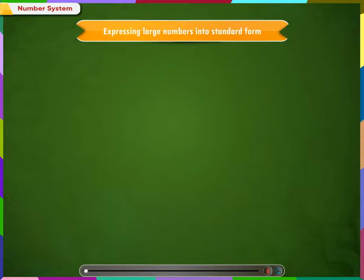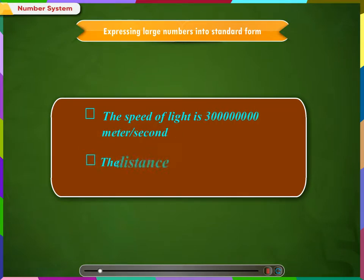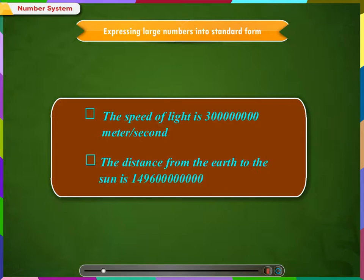Expressing large numbers into standard form. In our day-to-day life, we hear such statements. The speed of light is this. The distance from the earth to the sun is this. Look at the numbers in these statements. These two are very large numbers. Both these numbers are difficult to read. In such cases, we use exponents to represent these numbers, which are called as standard form.